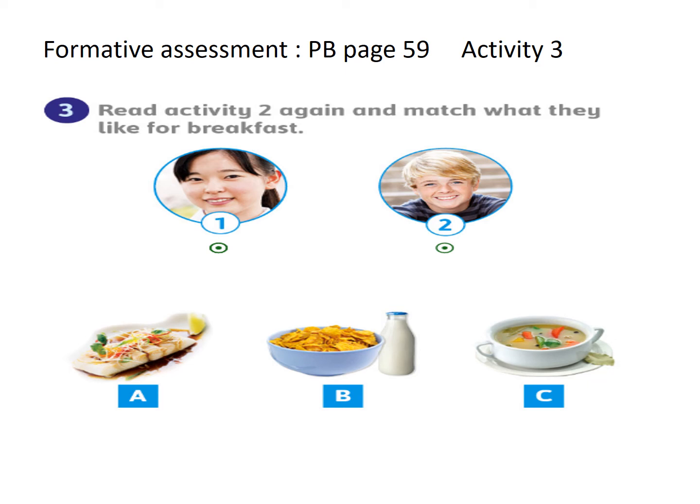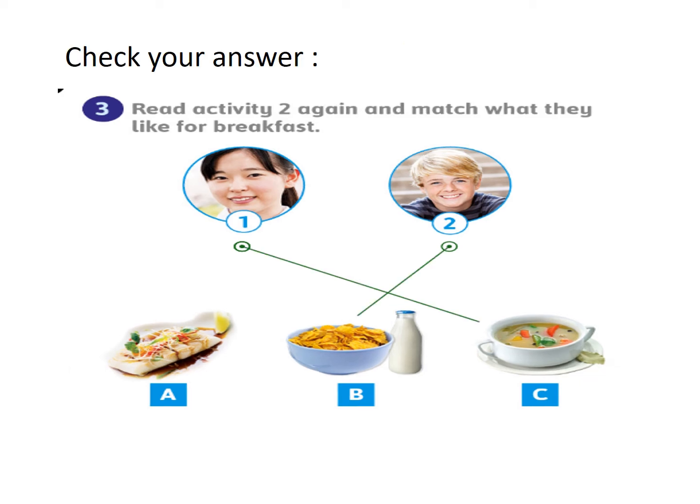Now we can do formative assessment, pupil's book page 59, activity number three: read activity two again and match what they like for breakfast. A Japanese girl likes soup and fish. The boy likes cereal with milk. Very good.